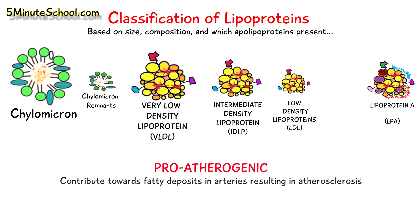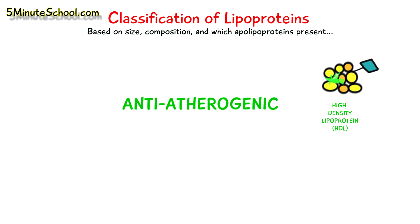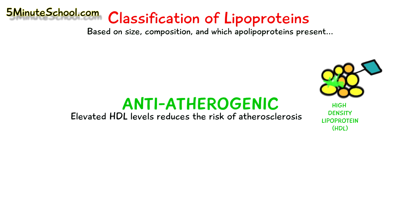Being pro-atherogenic means they contribute towards fatty deposits in the arteries, and that can result in atherosclerosis. HDL, on the other hand, is anti-atherogenic, so elevated levels of HDL tend to reduce the risk of atherosclerosis.